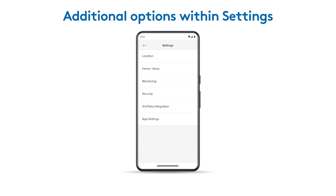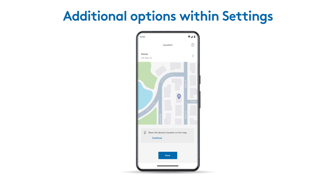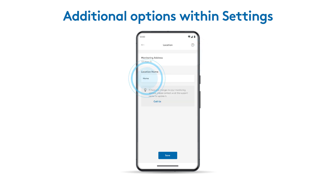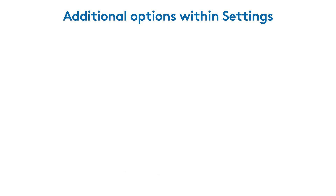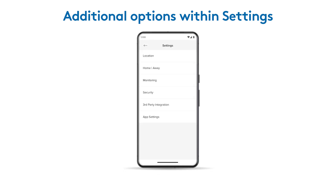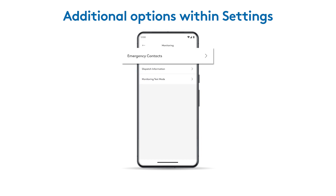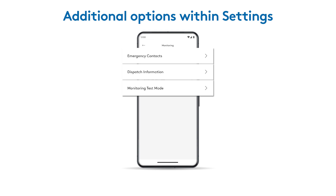Back on the settings screen, you have more options to manage your system. Select location to view or rename your system's address. If you have ADT professional monitoring, tap monitoring to update emergency contacts, add dispatch information, and enable monitoring test mode.